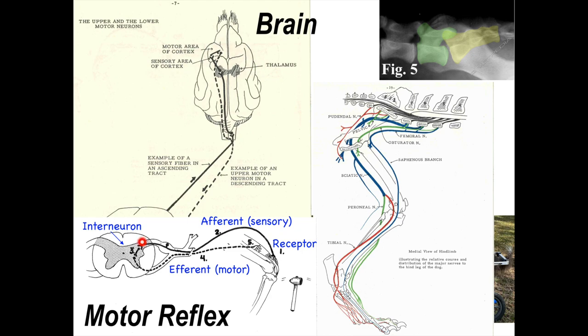A signal is also sent upward to the brain, to the thalamus, where it synapses with the sensory area of the cortex.